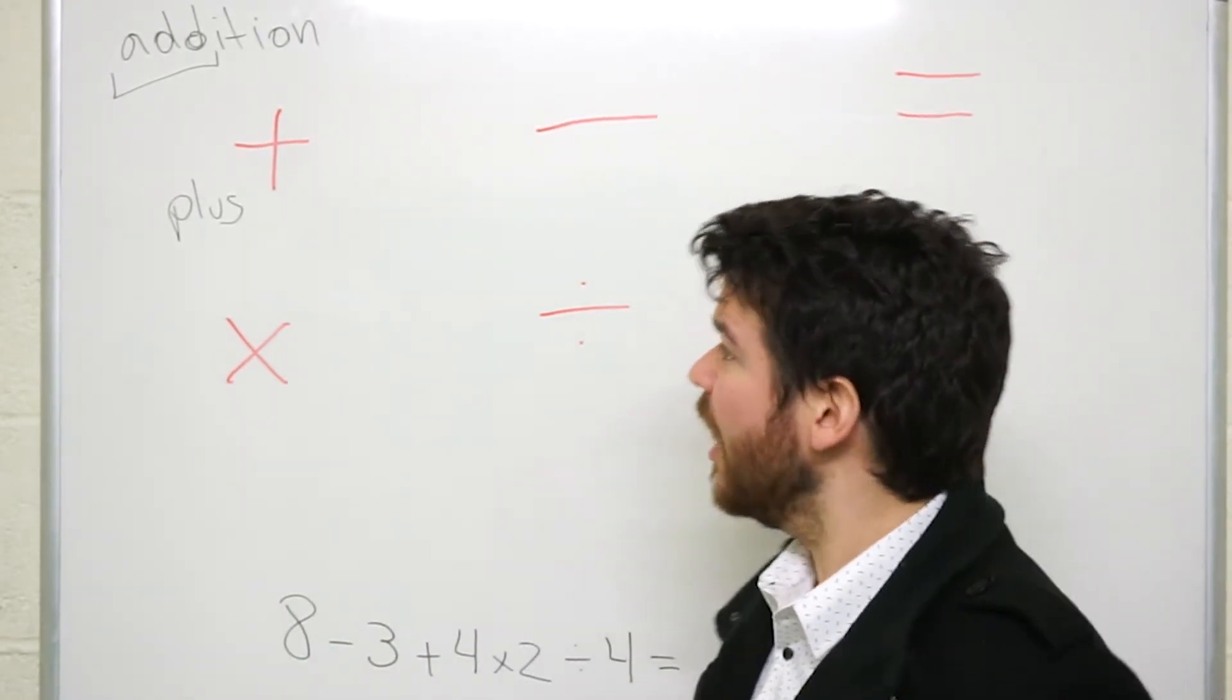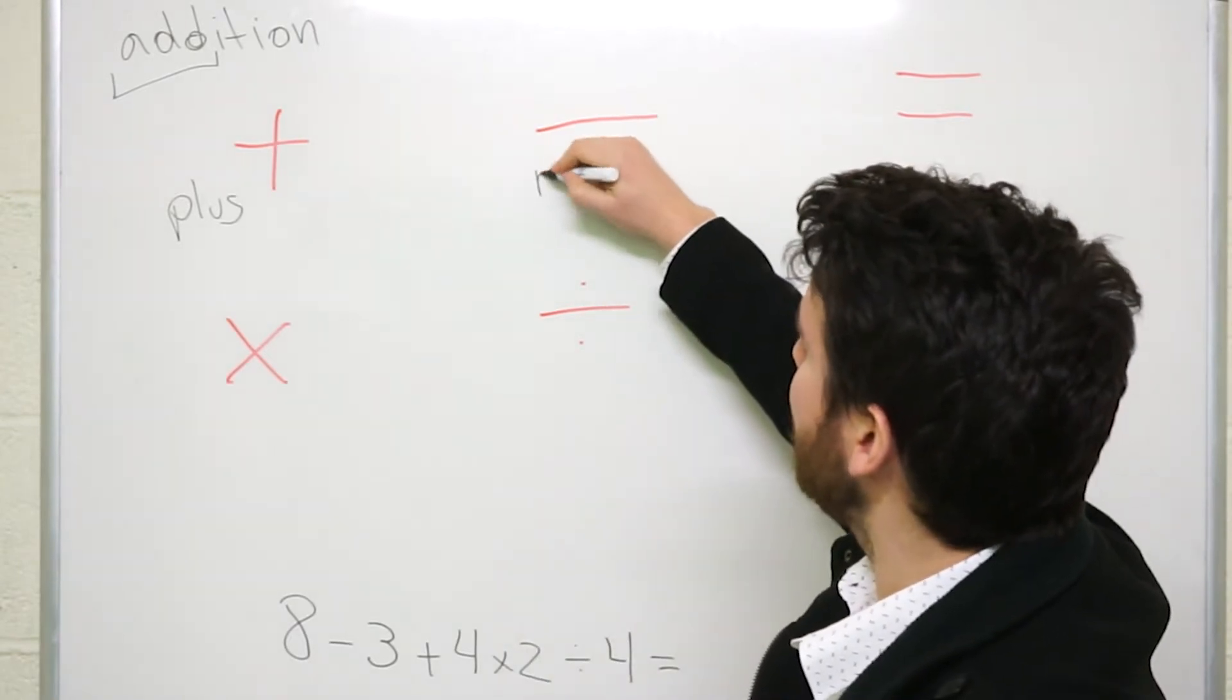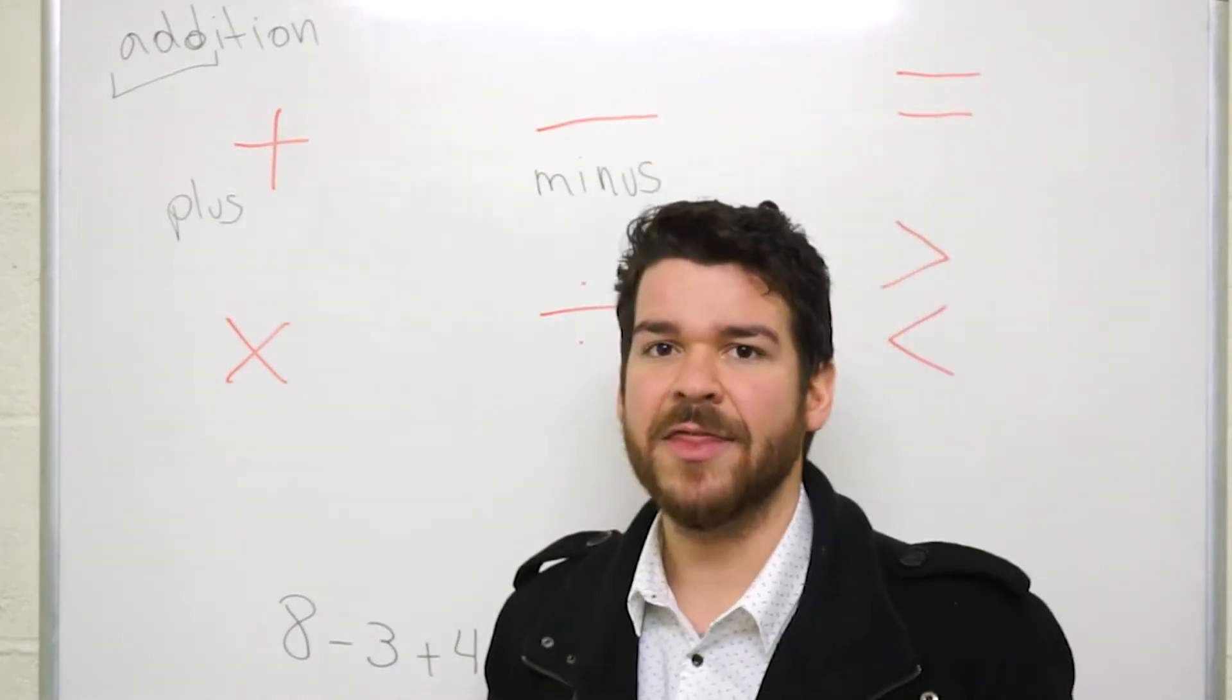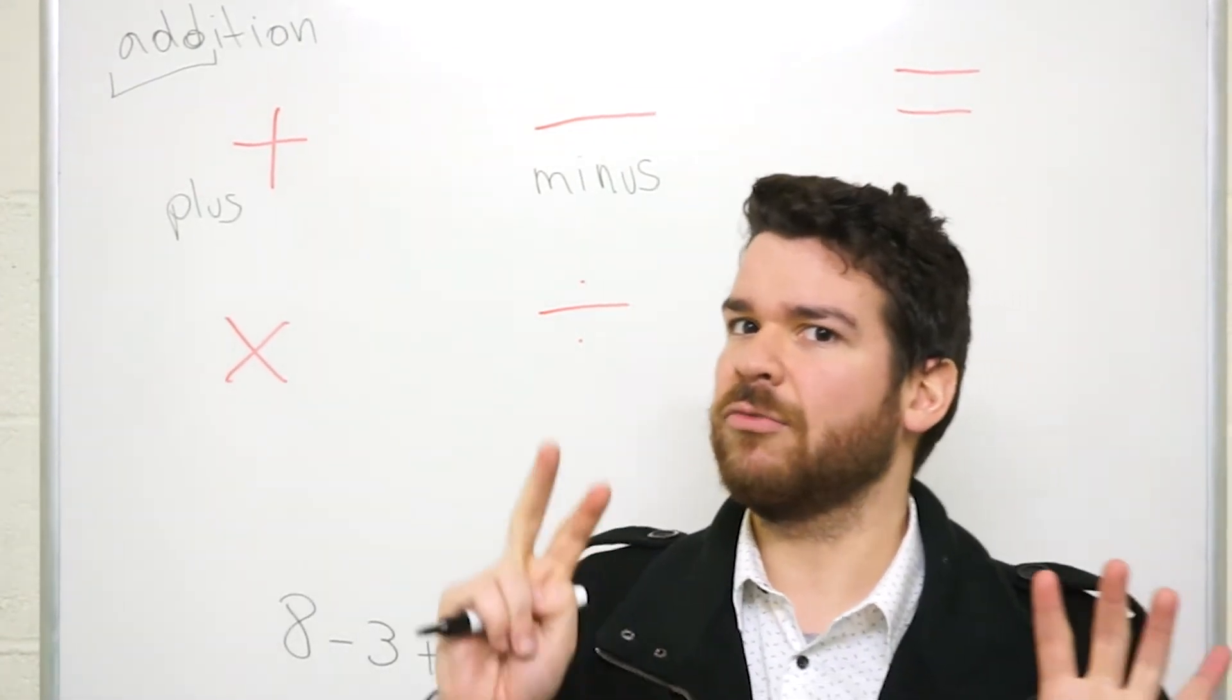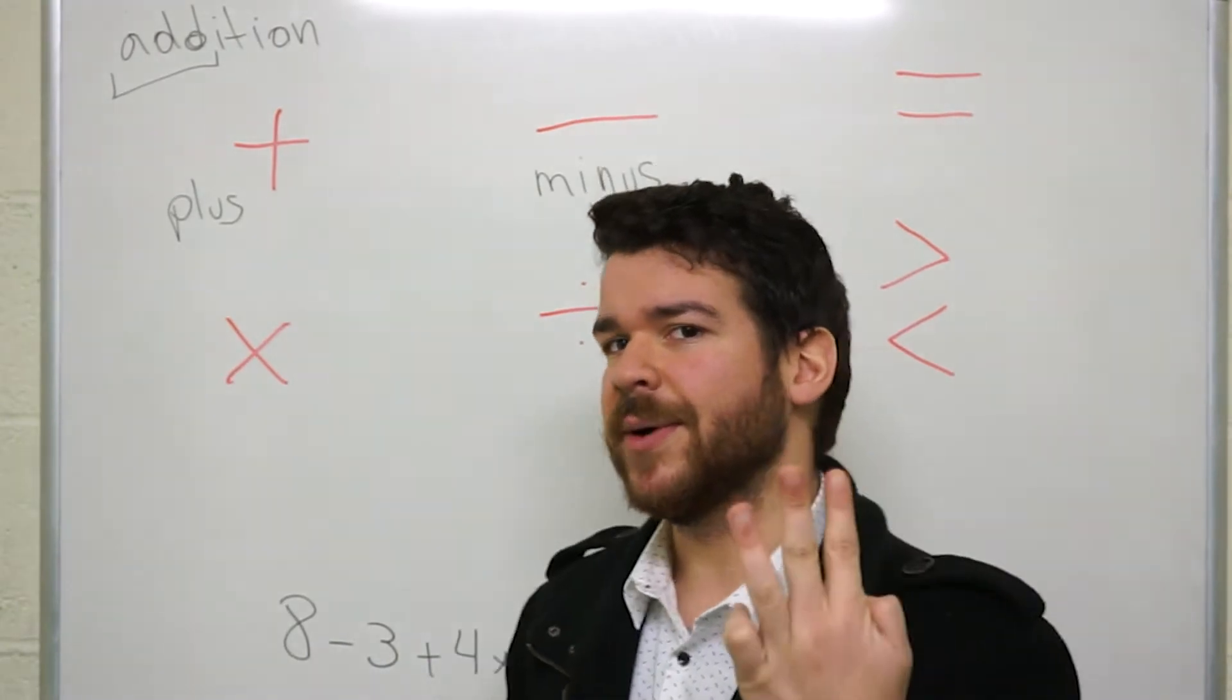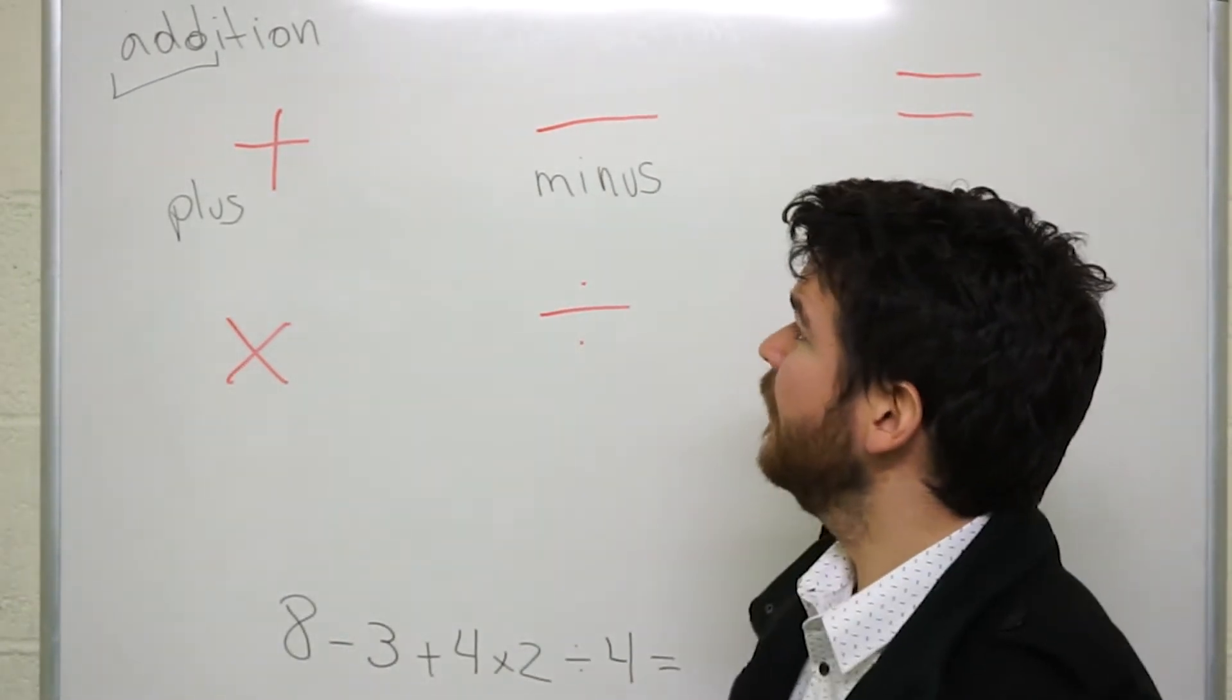Now the other one, this one is called minus. In math we call it minus, like five minus two, we have three, equals to three. Very good.